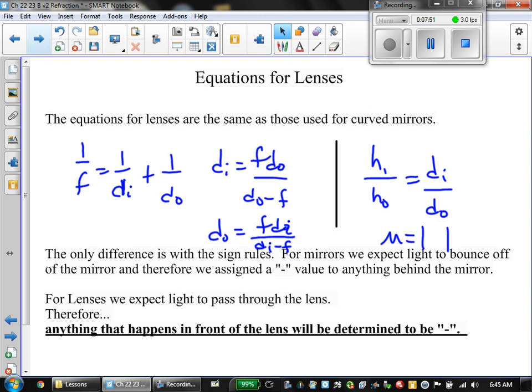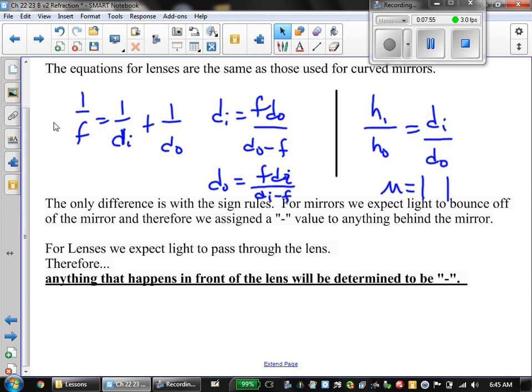Now the only thing, as I mentioned a moment ago, the only difference with this are the sign rules. So with a mirror, I expect the light to bounce off the mirror, so things that happen behind the mirror are negative. For lenses, we expect the light to pass through the lens, therefore anything that happens in front of the lens will be determined to be negative.